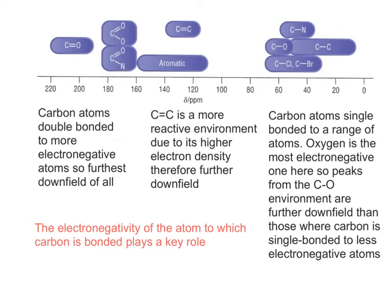If you're looking at two different environments and trying to work out why one is further downfield than another, the electronegativity of the atom to which the carbon is bonded plays a key role. Furthest downfield, in this region, you have atoms that are double bonded to more electronegative atoms such as nitrogen or oxygen. If you were to look in the middle range, around here, you get a lot of pi bond activity, carbon-carbon double bonds and pi rings. That tends to be slightly more reactive due to higher electron density in the case of carbon-carbon double bonds, and the delocalized pi system can potentially get involved in electrophilic activity as well.